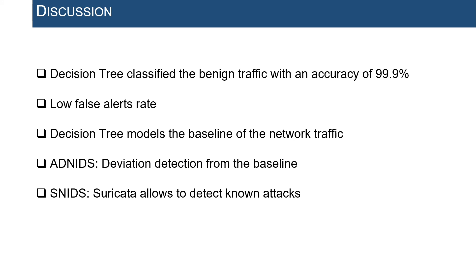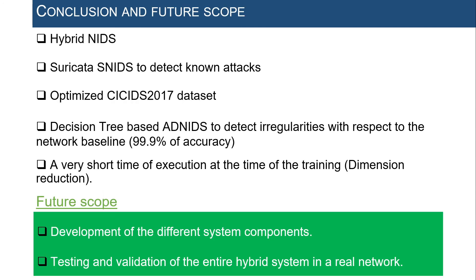As we have seen, the decision tree has given conclusive results in the classification of benign traffic, with an accuracy of almost 100% and a very low false alarm rate. Therefore, the decision tree is the most adequate algorithm to elaborate the network baseline and produce a very efficient ADNIDS capable of detecting irregularities with respect to normal network patterns.